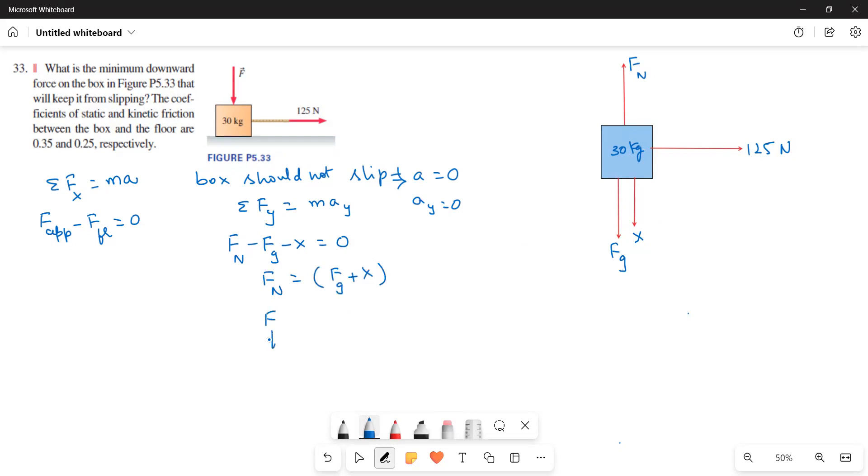F friction is equal to mu FN. So instead of FN, I will write, that means this is equal to mu times, mu S times. Here S, static friction, coefficient of static friction we have to take, times FG plus X.